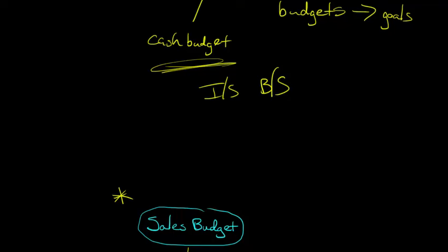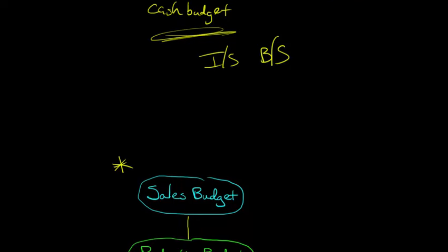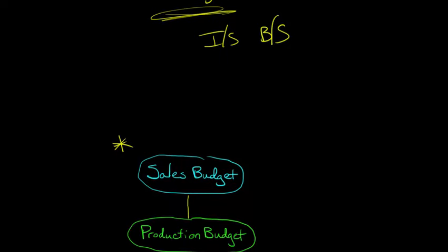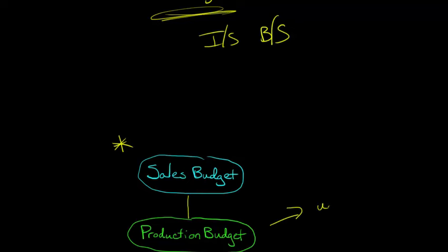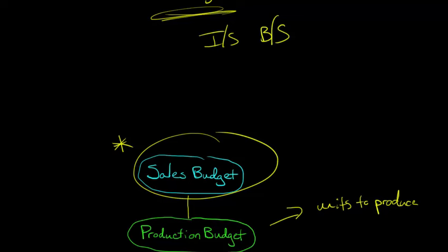For example, our next budget is going to be the production budget. If you think about the production budget, we're going to need to know how many units we're going to have to produce. But how can we know that if we don't know the sales budget — how many units we expect to sell?